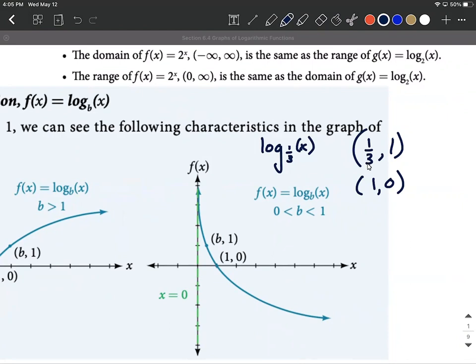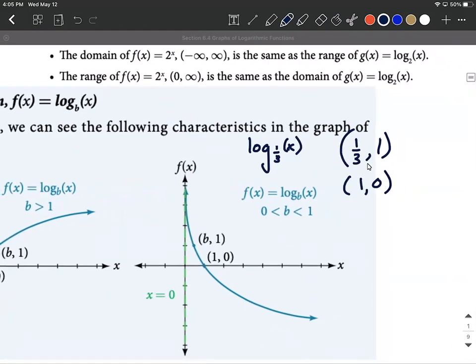Instead let me give you one additional key point. It's going to be the reciprocal of whatever the base is. So the reciprocal sometimes we can write that as one over b comma negative one. In our specific example because I brought up one third being our base, its reciprocal would be when you flip it upside down. So instead of one over three, three over one which is equivalent to (3, -1).